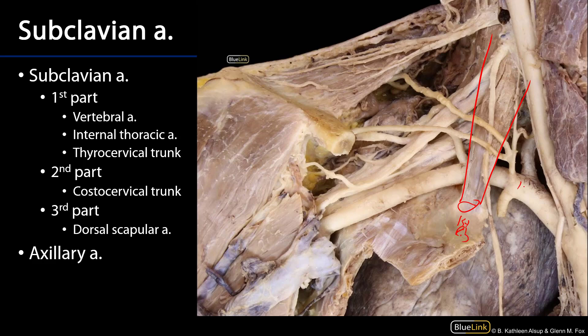The first part of the subclavian artery is found medial to the anterior scalene muscle and it has three branches: the vertebral artery, the internal thoracic artery, and the thyrocervical trunk.